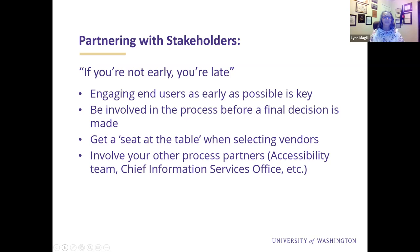A lot of end users come to us and say they've talked to five vendors, they like one, and they want you to sign the contract next week because they need to implement it in two weeks. By then, they're not going to want to go back and start reevaluating vendors. The earlier you can get them in front of you, the better — it helps you get the accessibility conversation handled before it's too late. Make sure you get a seat at the table when selecting vendors, and involve your other process partners if you have them — accessibility teams, IT, privacy offices.